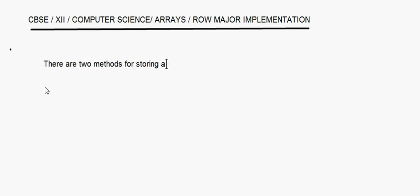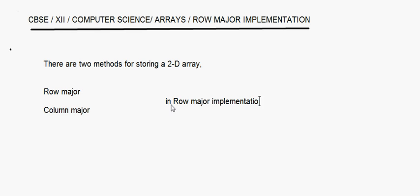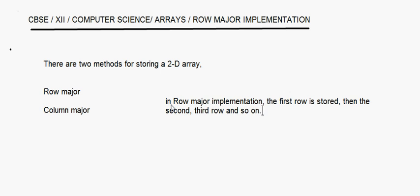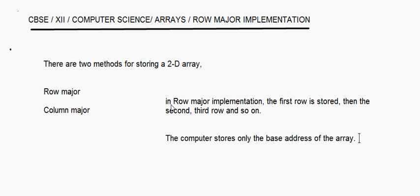There are two methods for storing a two-dimensional array: one is row major, which we are covering today, and the other is column major. In row major implementation, the first row is stored, then the second row, third row, and so on. The computer stores only the base address — that is, the starting address of the array — and does not store the address of all elements.